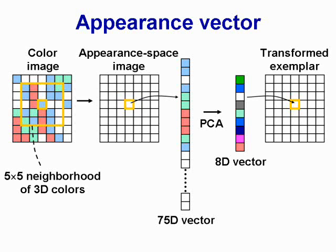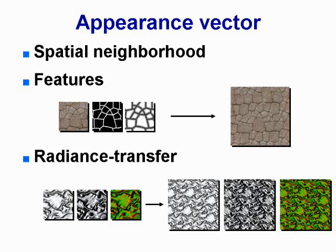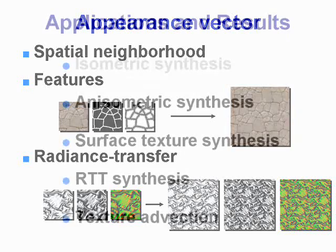The appearance vector can also include feature distance to better preserve semantic texture elements, or radiance transfer coefficients to obtain consistent self-shadowing.